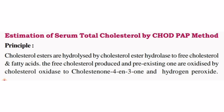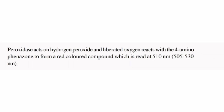In the CHOD-PAP method: cholesterol ester hydrolase enzyme hydrolyzes cholesterol esters, and free cholesterol and fatty acids are formed. Pre-existing free cholesterol is then oxidized by cholesterol oxidase, producing hydrogen peroxide. Hydrogen peroxide is then acted upon by peroxidase, liberating oxygen, which reacts with 4-aminoantipyrine to form a red-colored compound measured at 510 nanometers.